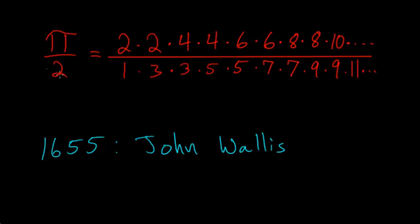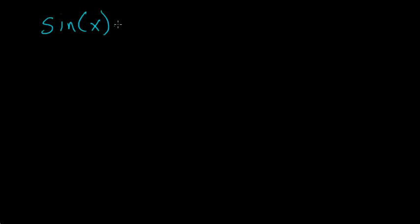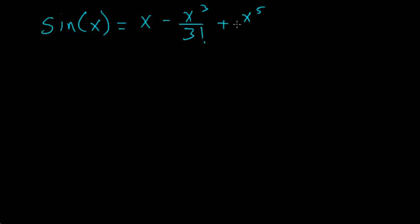This result comes from the sine function. The sine function can be written as an infinitely long polynomial using its Taylor series: sine(x) = x − x³/3! + x⁵/5! − x⁷/7!, and this pattern continues — the next term would be x⁹/9!.